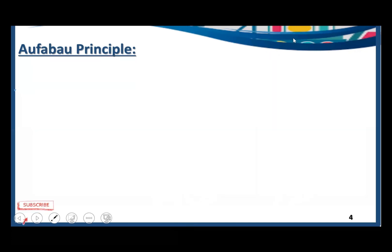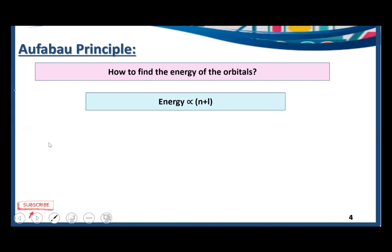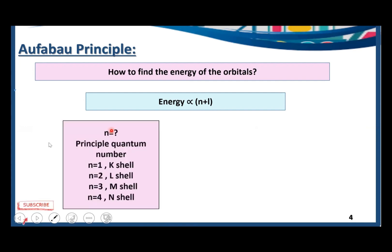Energy is directly proportional to the n plus l value. A lower n plus l value means lower energy; a higher n plus l value means higher energy. Here n is the principal quantum number: n=1 is the K shell, n=2 is the L shell, n=3 is the M shell, and n=4 is the N shell.